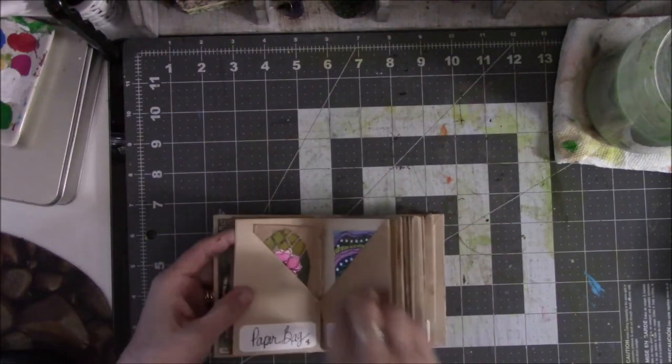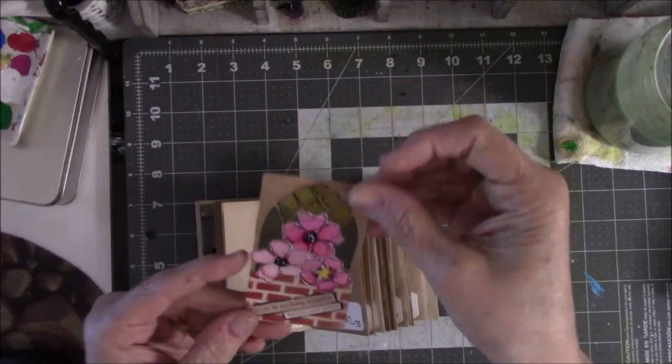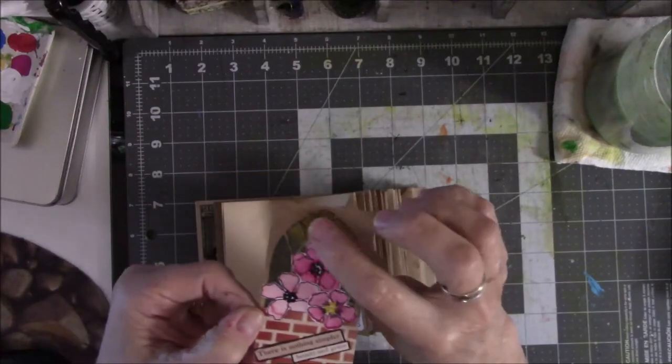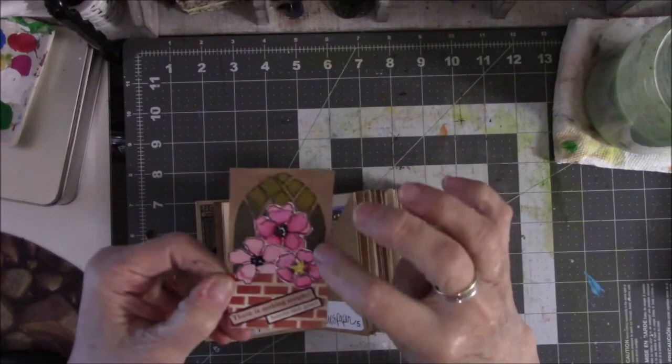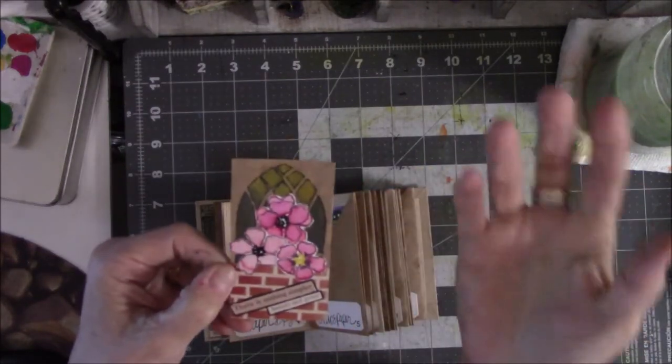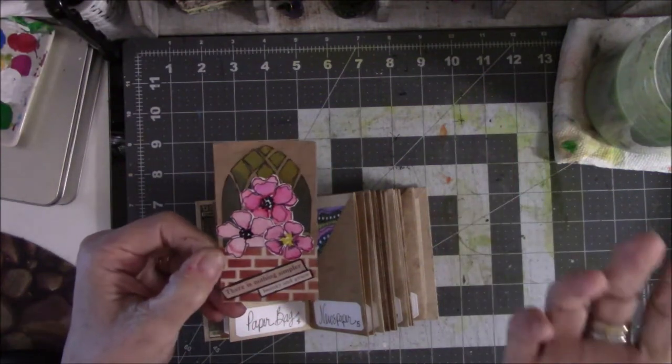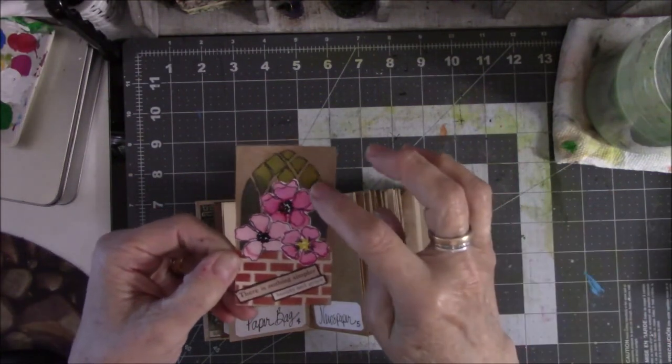This is a stencil from my friend Carla at What If NC and I used it to make a brick wall for a planter for flowers, then I drew all the little flowers and did the background. Number four is paper bag. I did a paper bag and the cathedral stained glass looking thing is another stencil from my friend Carla at What If NC.